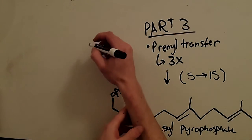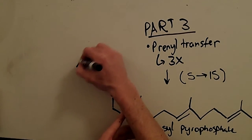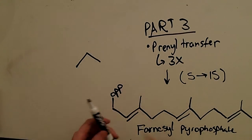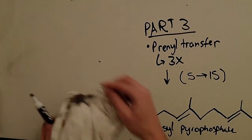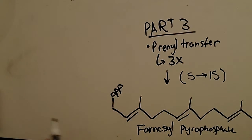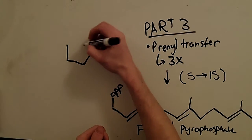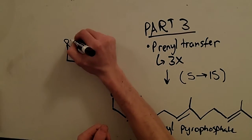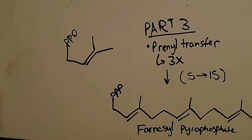Before we had left off with the dimethylallyl pyrophosphate, and that looks something like this. So I'm going to draw it in the same sort of format as we had, just so we can stay consistent and see what went where. Okay, so the allelic system, dimethylallyl pyrophosphate. Okay, so this is what we had before.